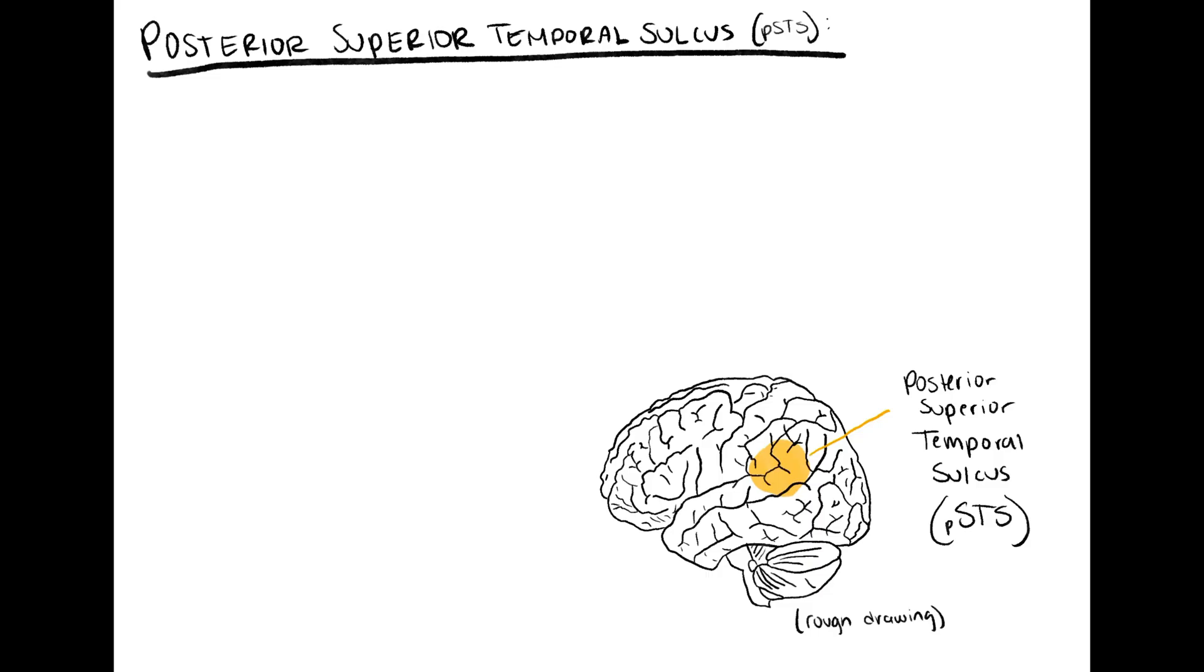Moving on from the limbic system, let's take a look at other key players in the social brain. First up to bat, the posterior superior temporal sulcus.